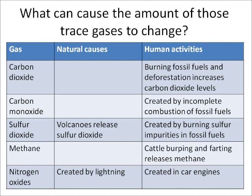Sulfur dioxide levels can go up for two reasons. One, volcanoes — when they erupt, they emit lots of sulfur dioxide. But also, there's sulfur in fossil fuels, and if we burn fossil fuels, we will release sulfur dioxide.